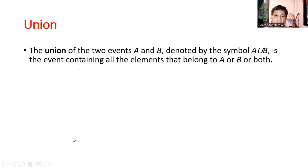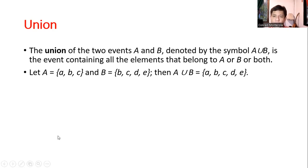Union. So the union of two events, A and B, denoted by the symbol A union B is the event containing all the elements that belong to A or B or both. So for example, let set A be equal to ABC, and let set B equals to BCDE, then A union B is simply equal to A, B, C, D, and E. So basically, you're just going to combine all the elements of A and B. But of course, you're just going to mention it once. That's how we write the set. We just mention its element once.